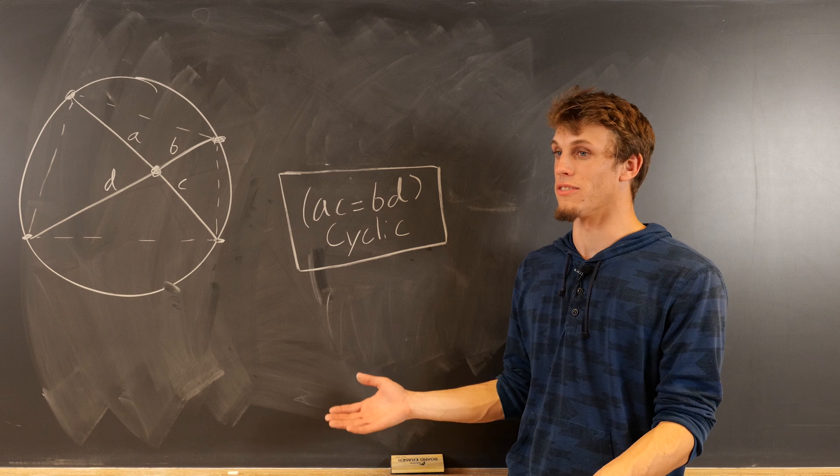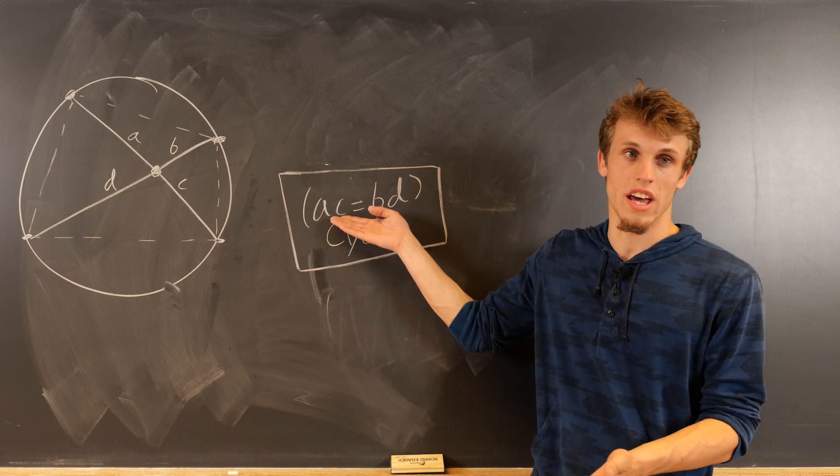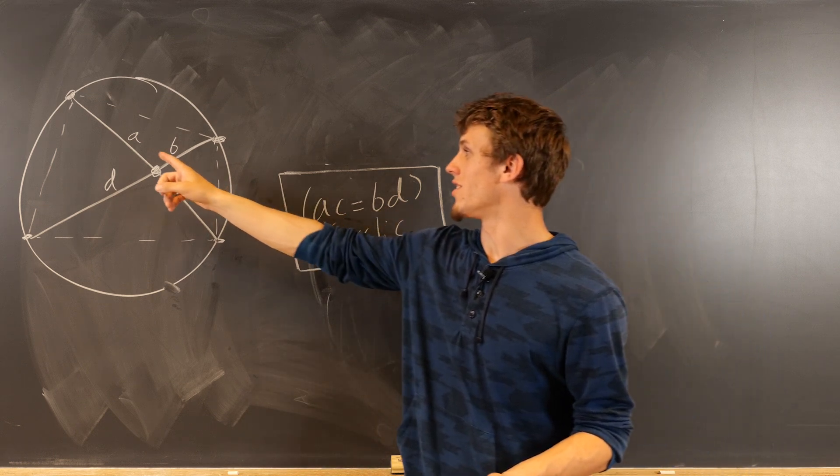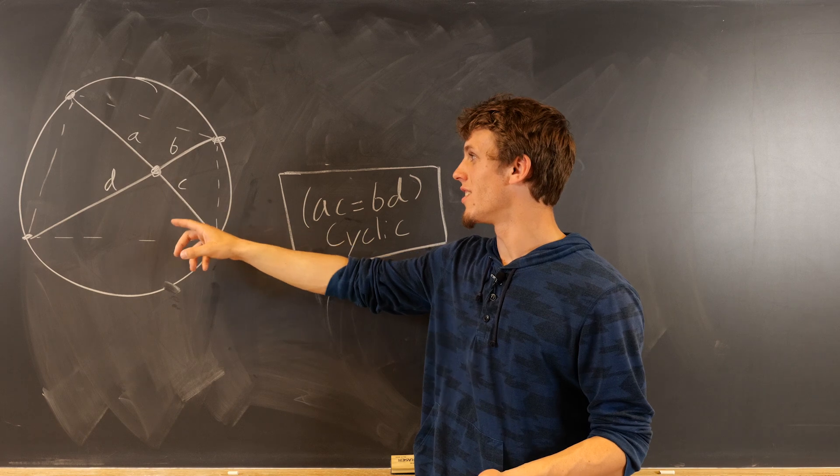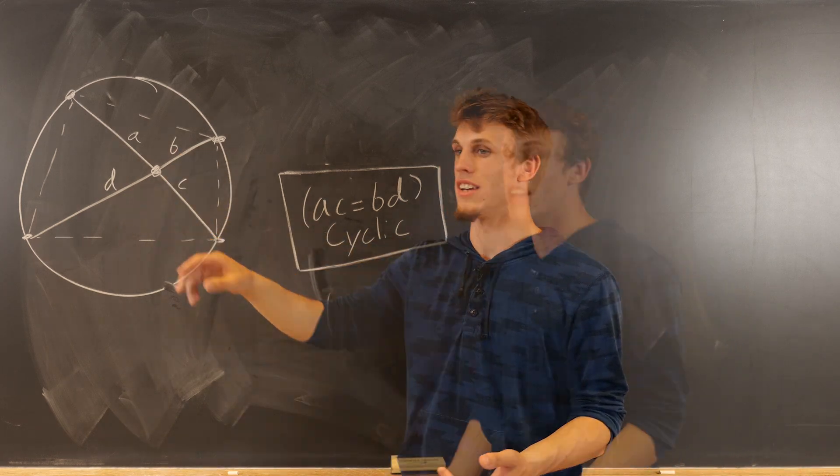And a characterizing feature is exactly what we've said. The product of these arms, AC, are equal to the product, BD.